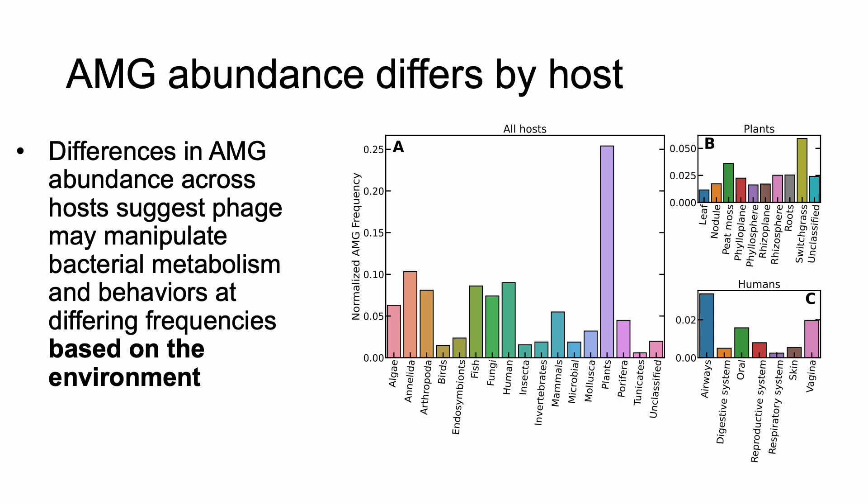It is clear from this plot that there are major differences in AMG frequencies when stratified by hosts. In particular, plant-associated phage appear to be the most frequent encoders of AMGs. On the two plots on the right, I've zoomed further into both plants and humans to show that AMG frequencies can be further resolved into different parts of each host. For example, the switchgrass sub-environment of plants appears to be the most common location where AMGs are encoded, while this location in humans is the airways.